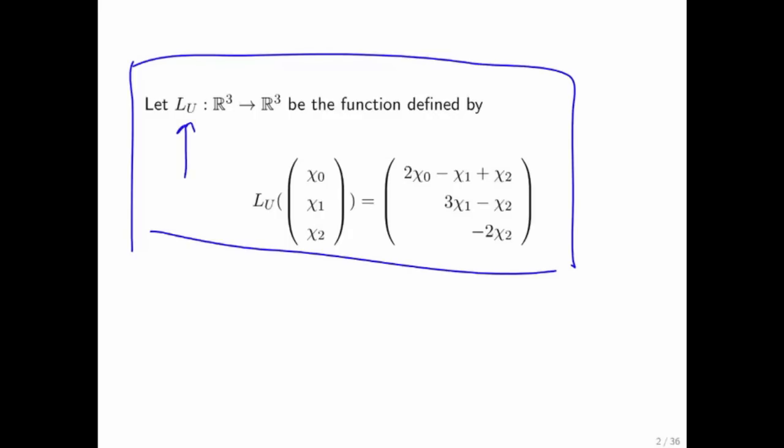We have a vector function we denote by L sub u. If we feed in a vector of size three, then out comes a vector of size three, where the first component is given there, the second component, and the third component.